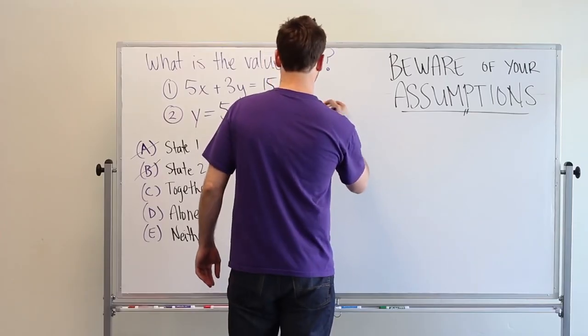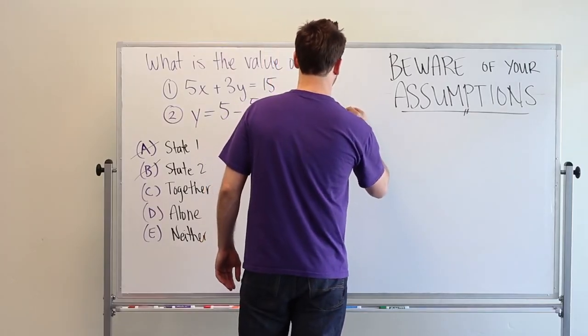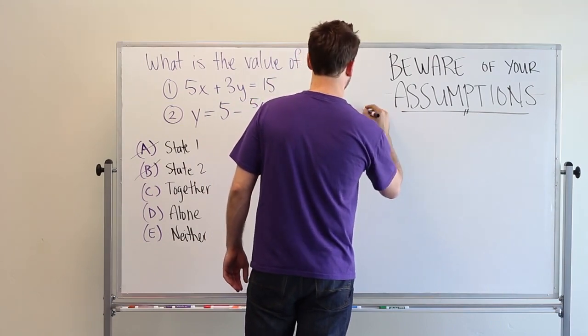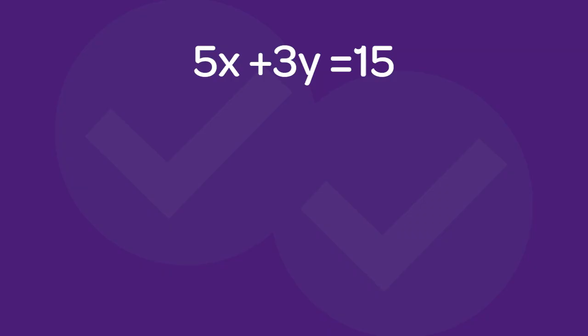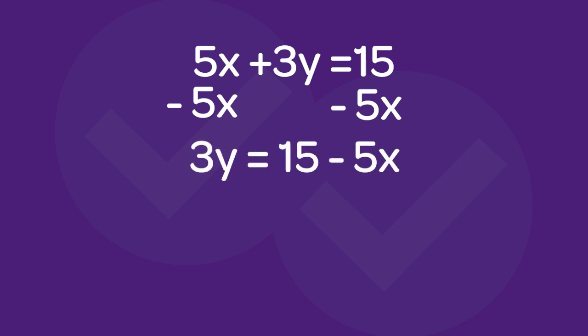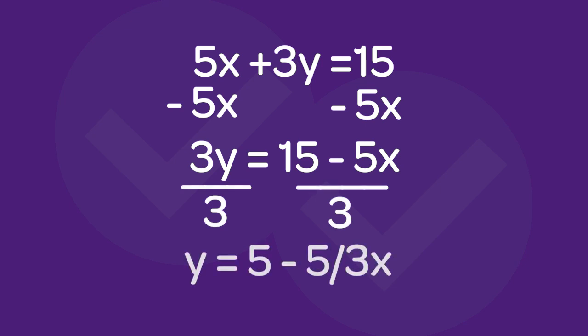So if we come over here, 5x plus 3y equals 15. Okay, so that's statement one. Let's move our 5x over. So minus 5x, minus 5x. So now I have 3y equals 15 minus 5x. Now I can divide by 3 on both sides, right? Now I have y equals 5 minus 5 over 3 x.